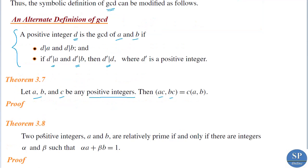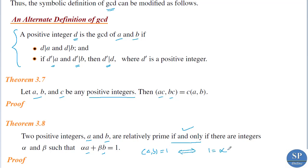Theorem 3.8: two positive integers a and b are relatively prime if and only if there are integers alpha and beta such that alpha·a plus beta·b equals 1. The first part: if a and b are relatively prime, then there exist alpha and beta such that alpha·a plus beta·b equals 1. The second (sufficient) part: if 1 can be expressed as a linear combination of a and b, then a and b are relatively prime.